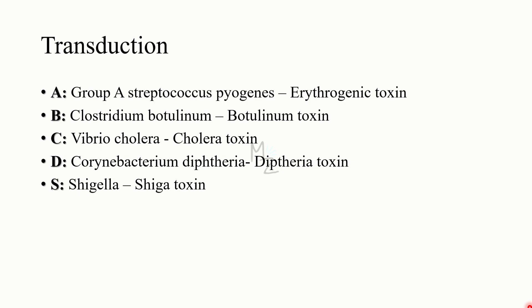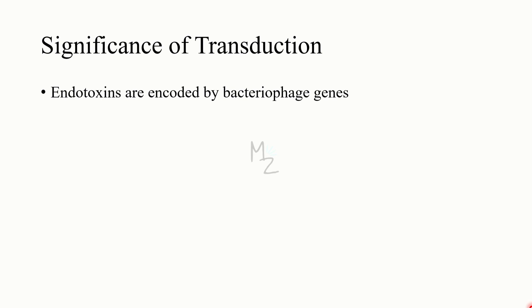Certain bacteria undergo transduction. For memorization, the mnemonic ABCDs: A for group A Streptococcus pyogenes — responsible for erythrogenic toxin; B for Clostridium botulinum — producing botulinum toxin; C for Vibrio cholerae — releasing cholera toxin; D for Corynebacterium diphtheriae — responsible for diphtheria toxin; S for Shigella — releasing Shiga toxin. The significance of transduction: exotoxins are encoded by bacteriophage genes and transferred by transduction.